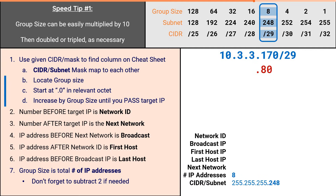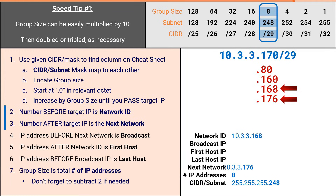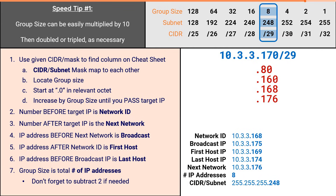We can multiply the group size by 10, then we can double or triple as necessary to get us closer to our target IP. Which means from .80, I can go directly to .160, then continue incrementing by 8 to .168, then .176, and at that point we've passed our target IP. From here, we just fill in all the attributes, adding or subtracting one as necessary, just like we've done many times before. Speed tip number 1 is that the group size can be multiplied by 10, then doubled or tripled as necessary so you can start your increments as close to the target IP as possible. Remember, once you've doubled or tripled, you must continue to increment by the group size until you pass the target IP.